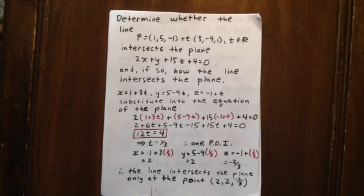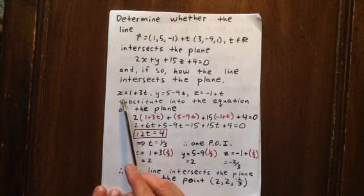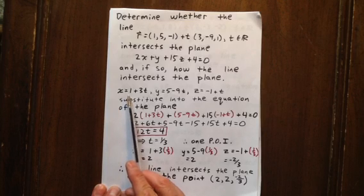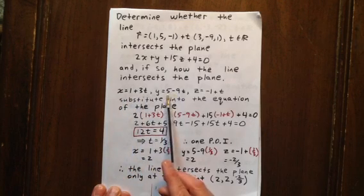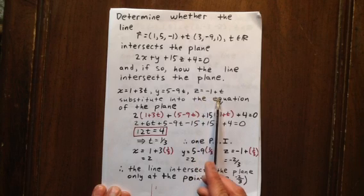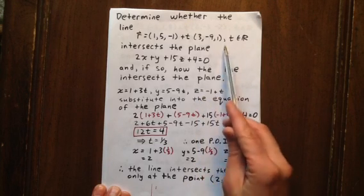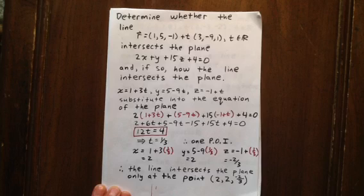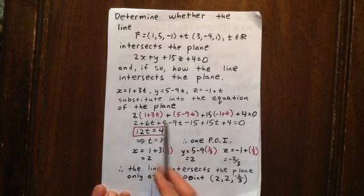Well, what we do is we can determine the parametric equations of the line in question. X is equal to this expression, Y is equal to this expression, and Z is equal to this expression as obtained from the vector equation of the line.